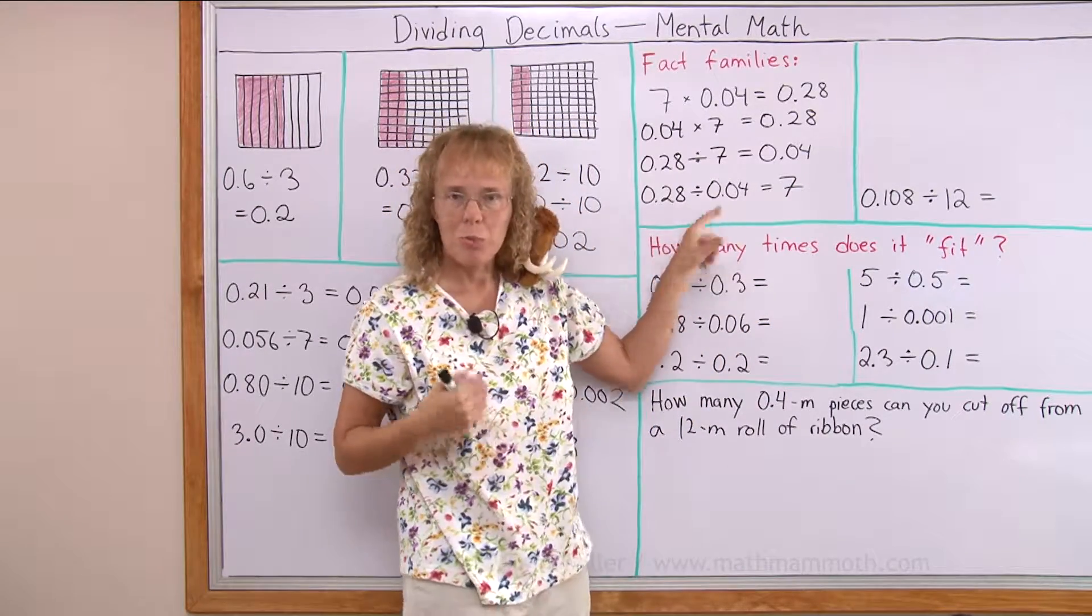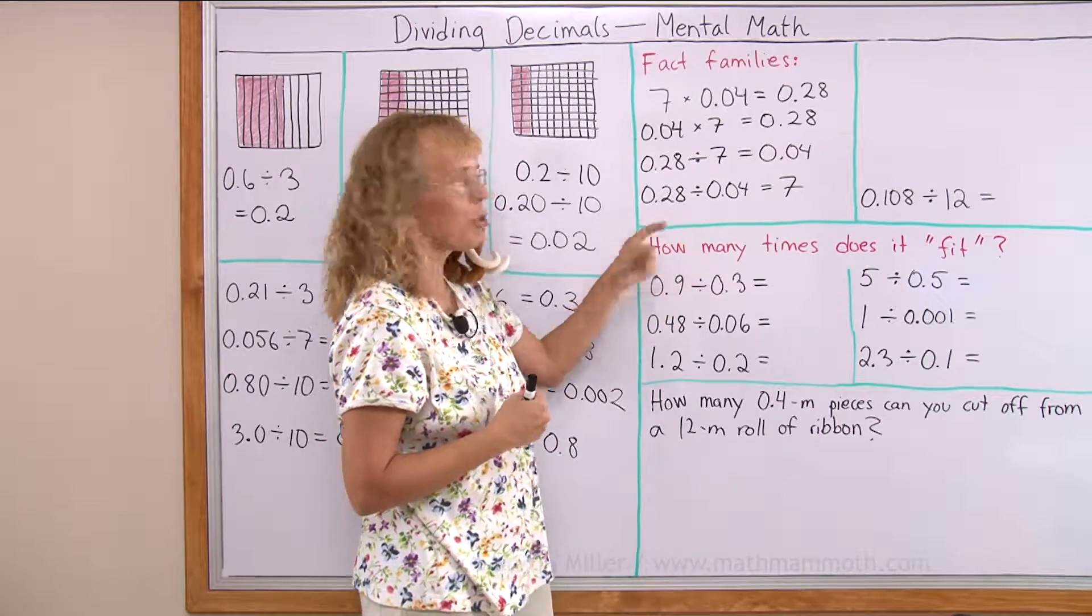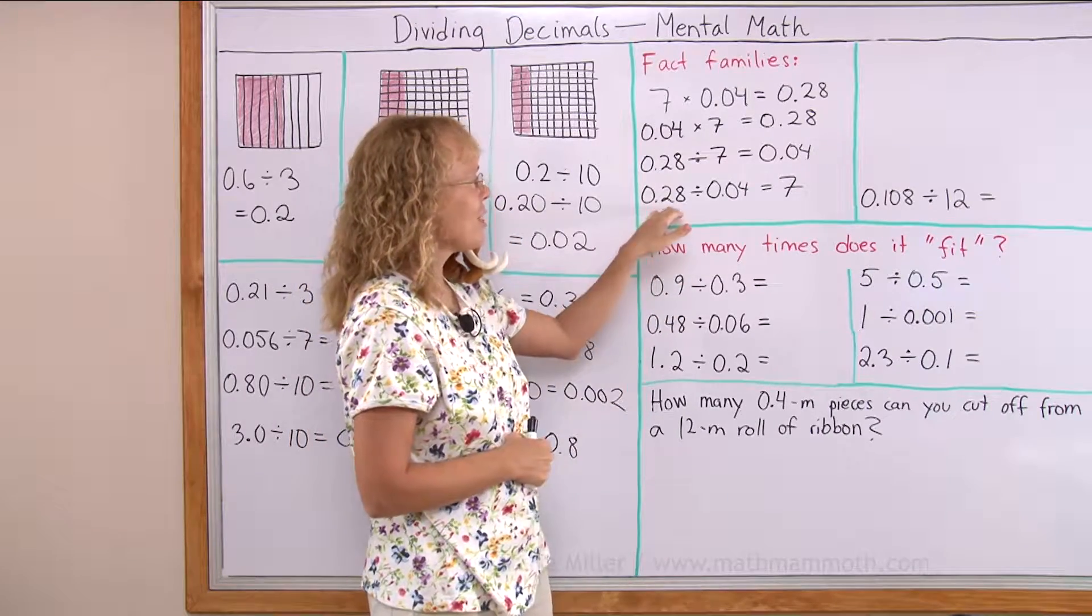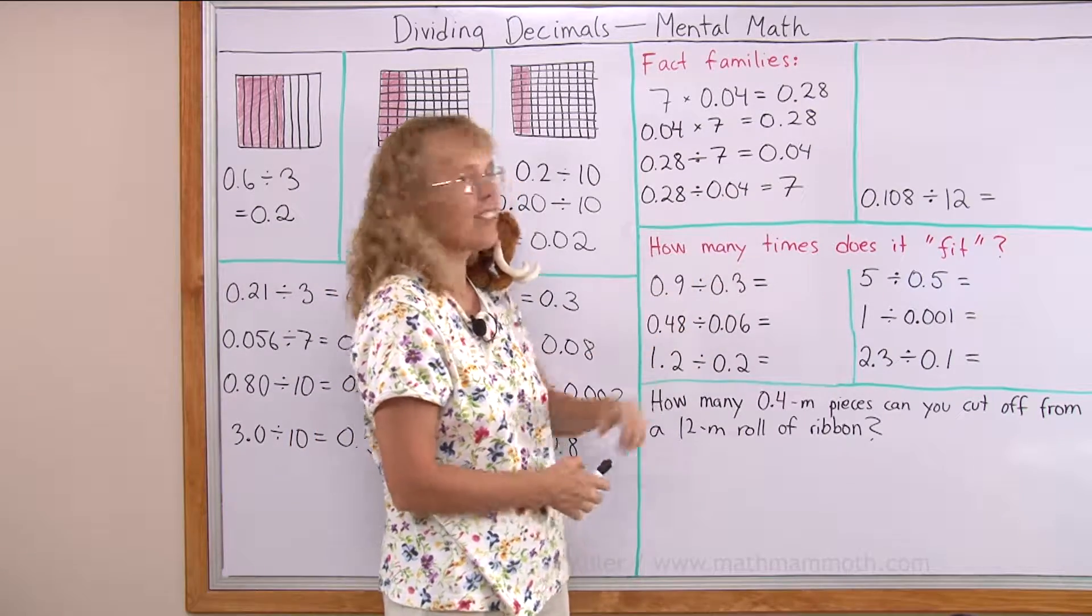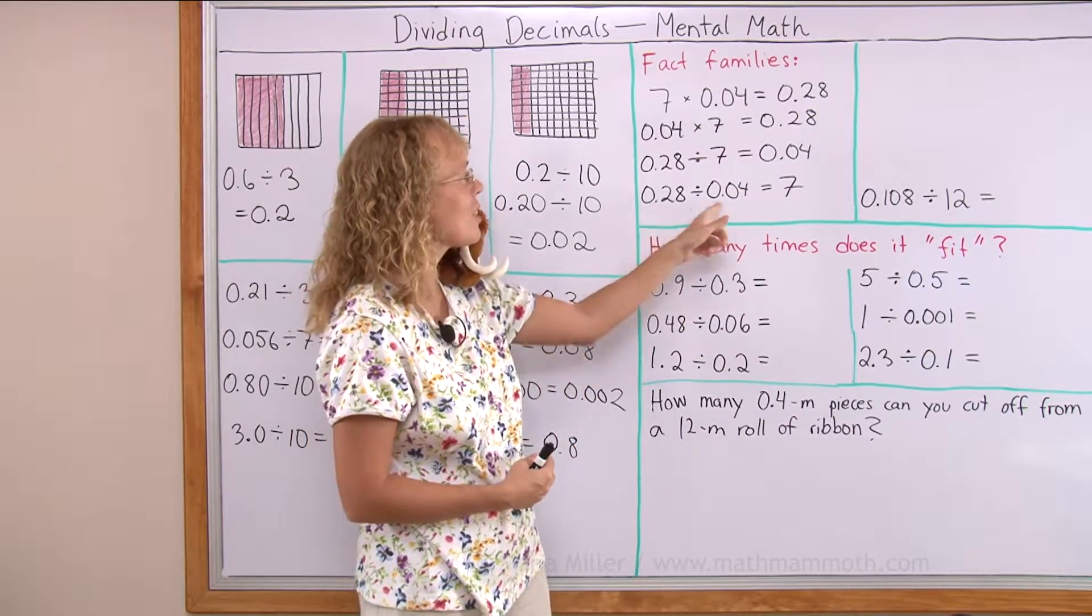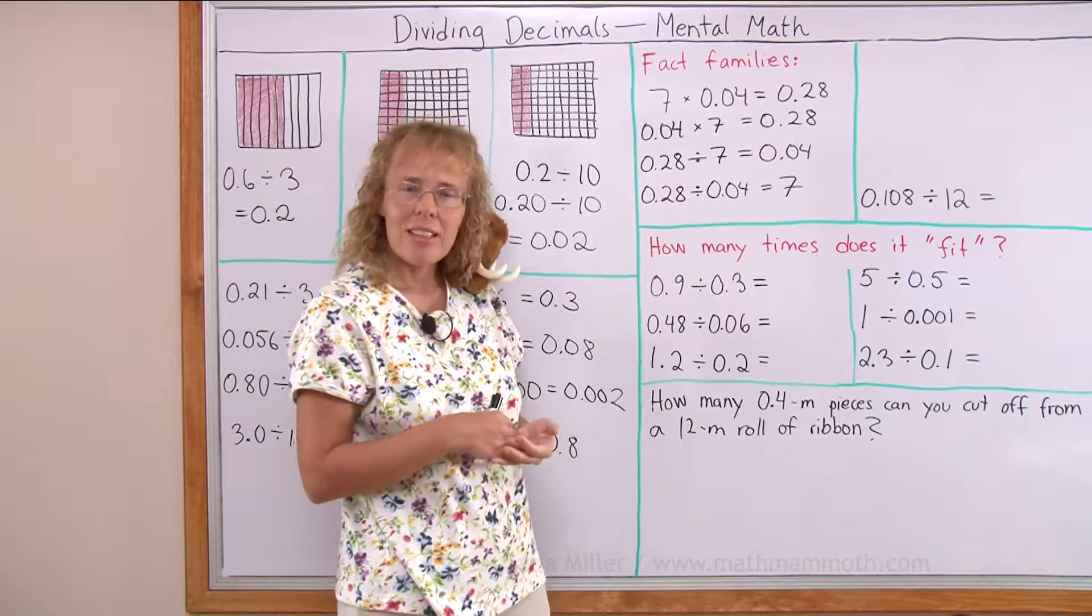And I want you to especially look at this. It looks kind of weird maybe if this is the first time you see a decimal divided by a decimal. The answer is 7, like a really big number compared to these that you start with.